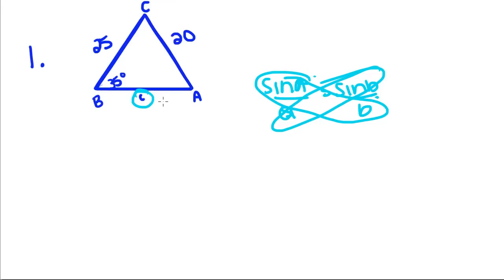So sine of 25... oh no, not sine of 25. Okay, we only have the measure of this angle, so that means we have to use this angle pair and this side pair.